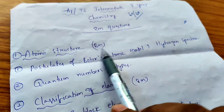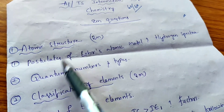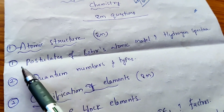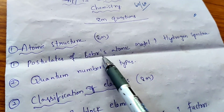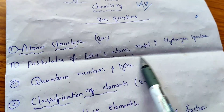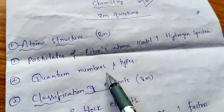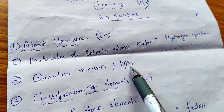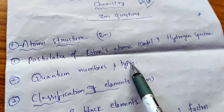Atomic Structure chapter: there are only 2 questions worth 8 marks each. First question: Write the postulates of Bohr's Atomic Model and how it is useful to explain the various spectral lines in hydrogen spectra. Second question: What are the different types of quantum numbers — principal quantum number, azimuthal quantum number, magnetic quantum number, and spin quantum number? You have to explain all four types.